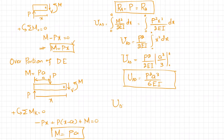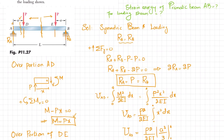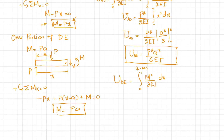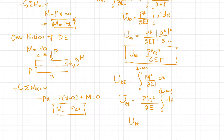The strain energy for portion DE is: U_DE equals the integral of M² over 2EI dx, with limits from 0 to L minus 2A, since the length of portion DE is L minus 2A. Substituting M equals PA: U_DE equals P²A² over 2EI times the integral of dx from 0 to L minus 2A, giving U_DE equals P²A²(L minus 2A) over 2EI.